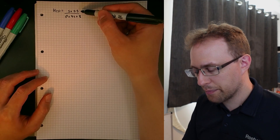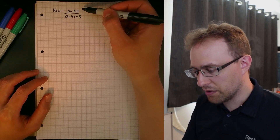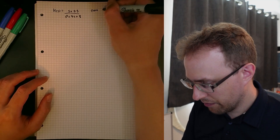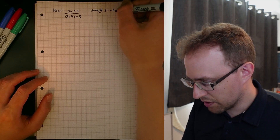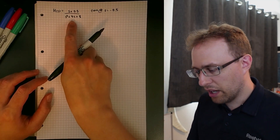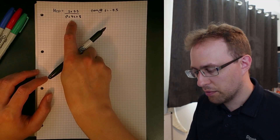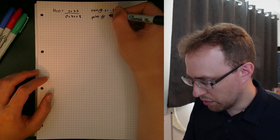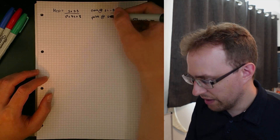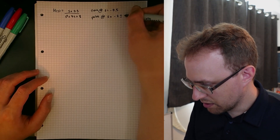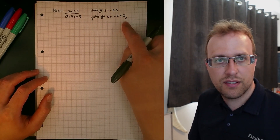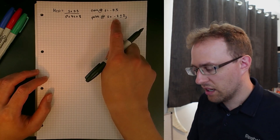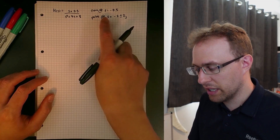The zeros are the roots of the numerator, and we know the numerator equals zero when s equals negative 0.5. So this system has a zero located at s = -0.5. The denominator is a quadratic with two poles located at s = -2 ± 2j. Since the real component of these poles is negative, this is a stable system.